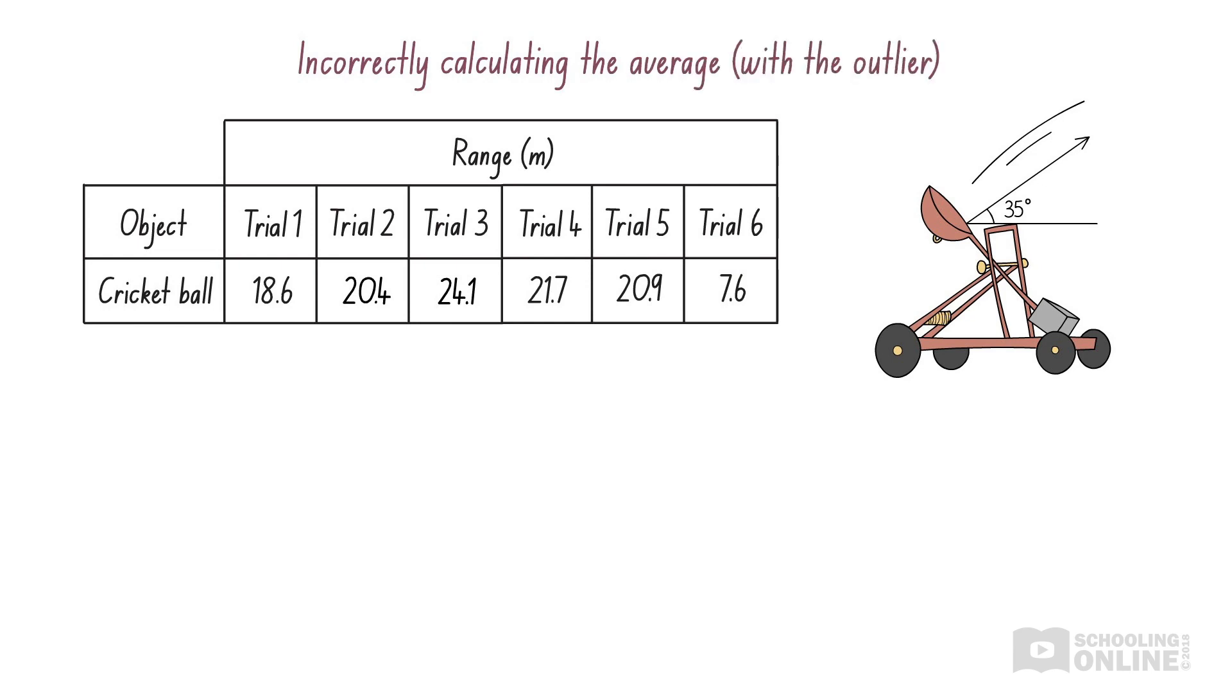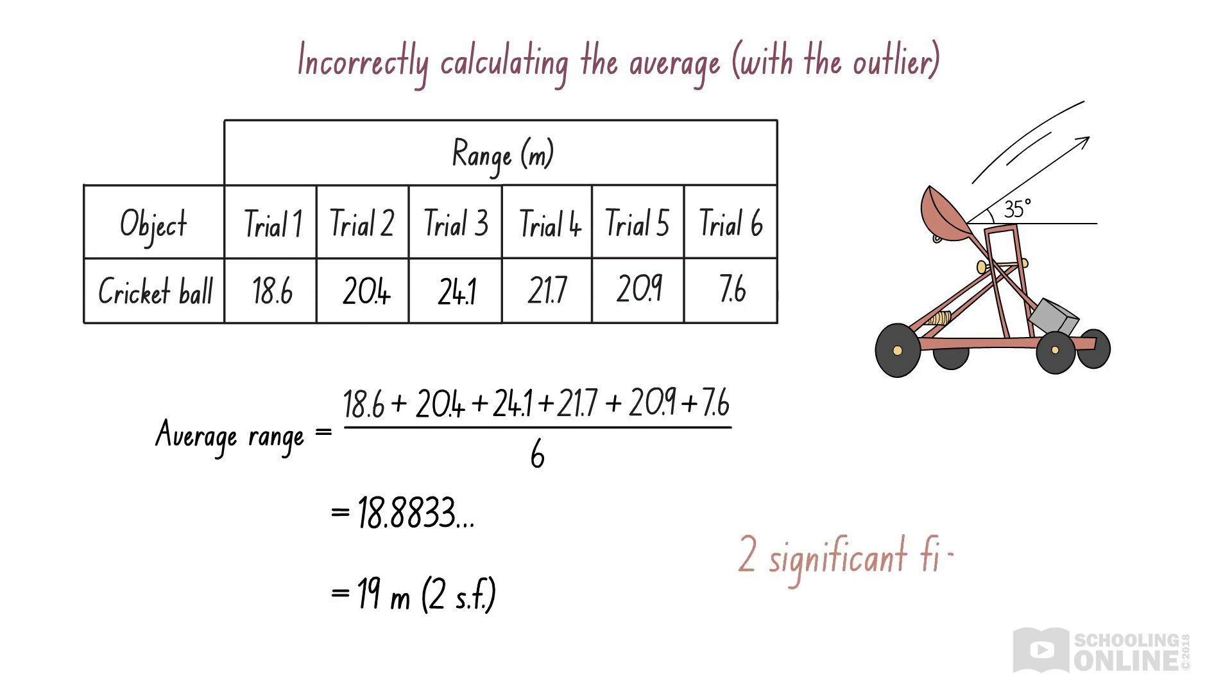Now, what would happen if we were to include the outlier when calculating the average? This would give us 19 metres, which doesn't match up with most of the measurements that we've taken and is too small. Therefore, it is important that we exclude outliers when calculating the average. This is particularly important when measuring the intensity of a sound, since the level of background noise can change over time.